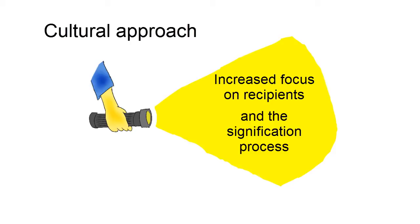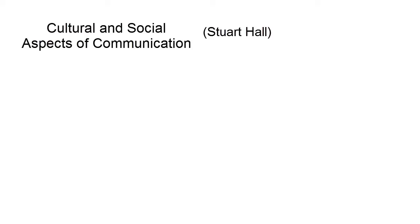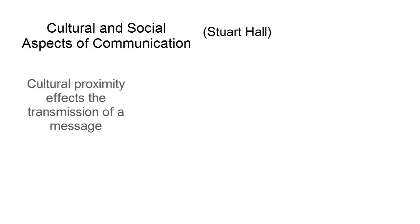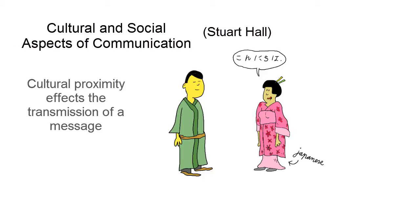It is very typical that Stuart Hall, a frontrunner of the reception perspective, also studied and put a large emphasis on cultural and social aspects of communication. He explained that cultural proximity affects the transmission of a message. In simple words, people will understand each other better when the different parties are culturally closer to each other. A simple example of this is language, one of many indicators of culture.